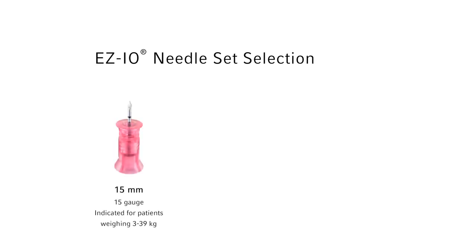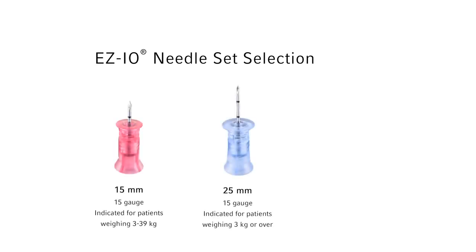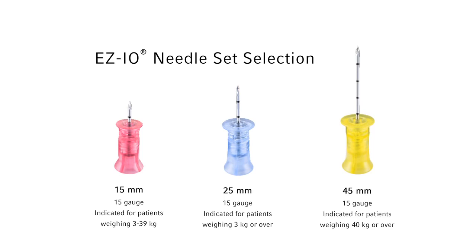Critical judgment should be used to determine appropriate needle set selection based on patient weight, anatomy, and tissue depth overlying the insertion site. To facilitate selection of the correct length needle set, tissue depth over the insertion site should be assessed prior to selection of the needle set.